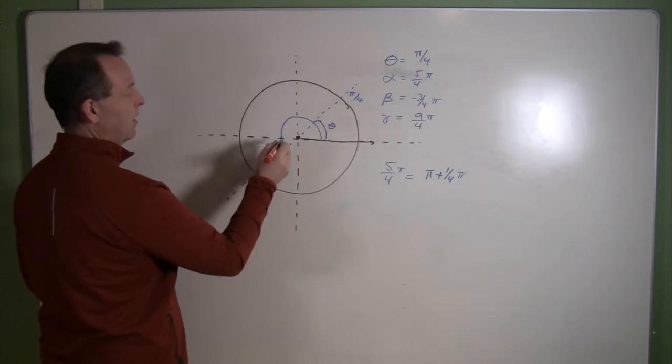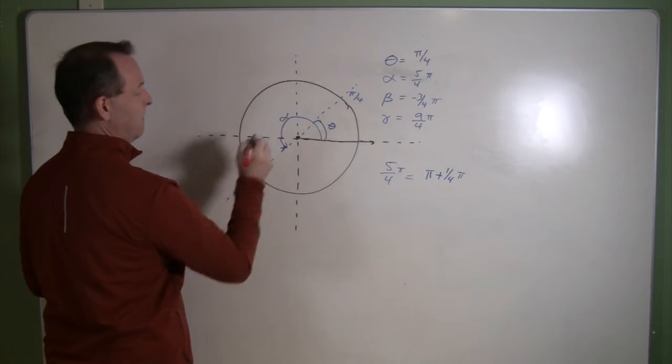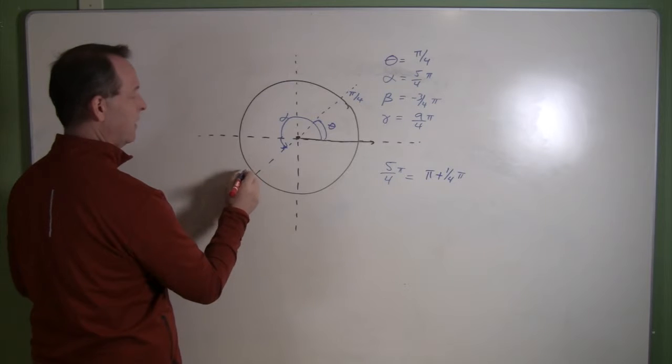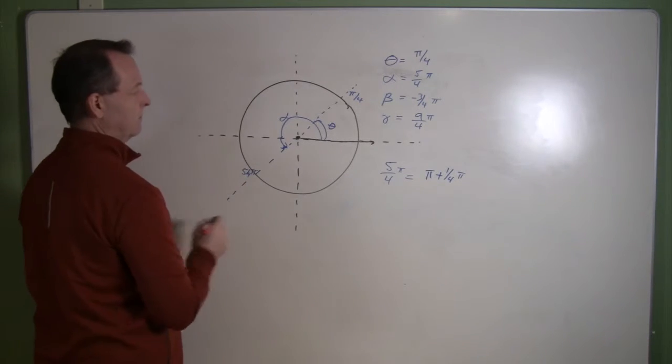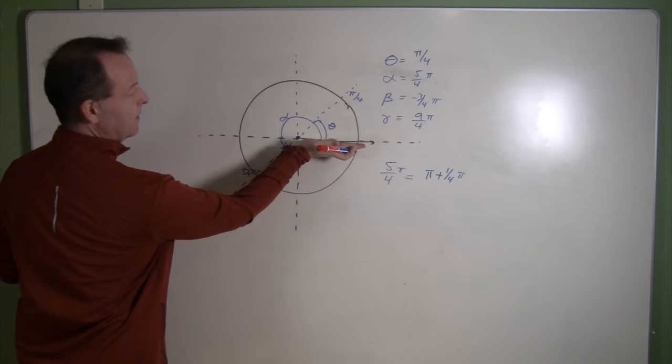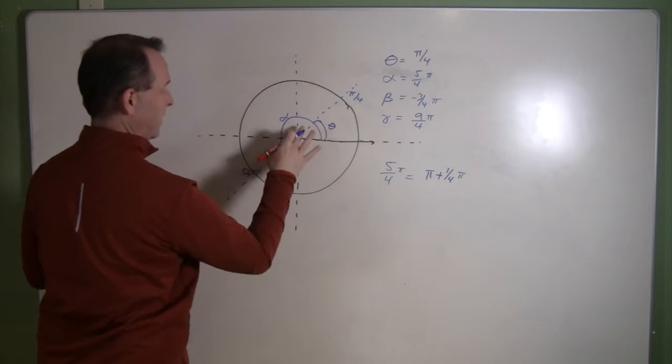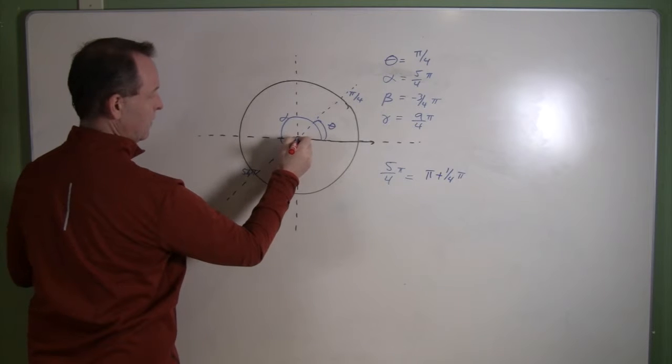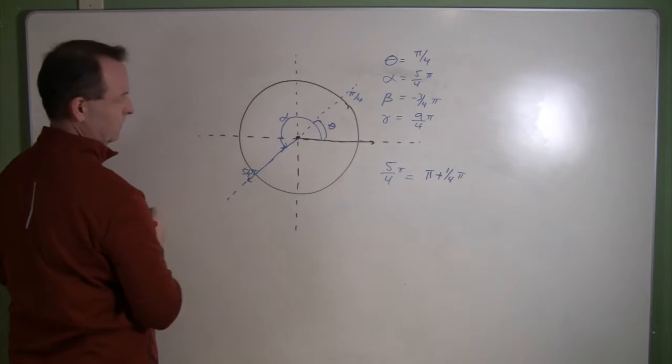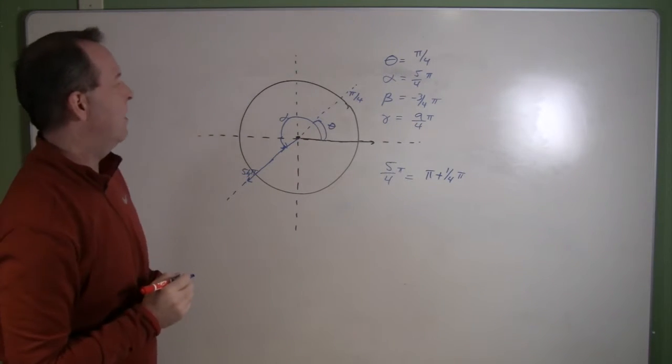So I'll draw a little angle, I'll call that alpha, and then I'll just mark over here that that is five fourths pi. So the angle that starts here flips all the way over and comes down and lands right there is five fourths pi.